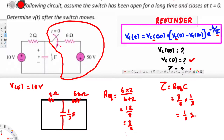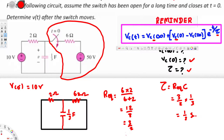Now we need to find vc(∞). When time goes to infinity, the switch is closed and current flows through the capacitor. After a long time, the capacitor becomes fully charged and acts like an open circuit, meaning no current flows through that branch. We remove the capacitor and find the voltage across that open-circuit terminal.